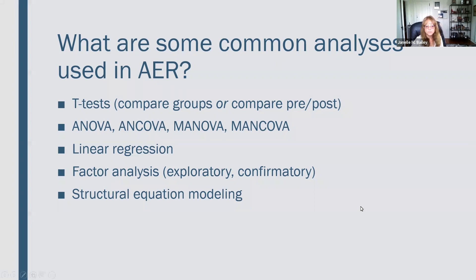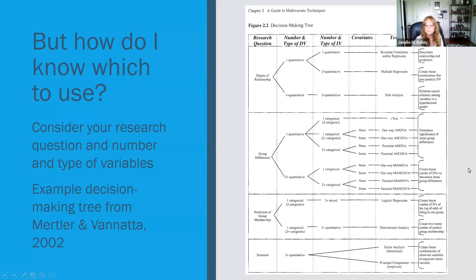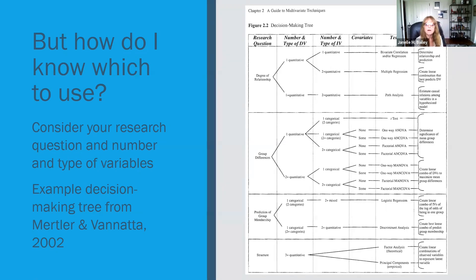So how do you know which one to use? One of the things you need to consider is the nature of your research question — not just the wording itself, but what it's really asking. Is it asking about a degree of relationship? Is it asking about group differences? And then think about how many variables you have and what type they are.